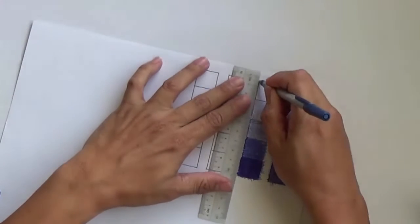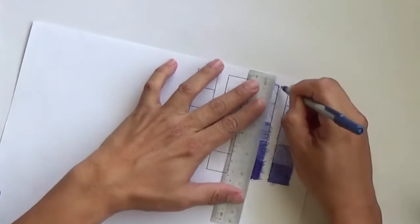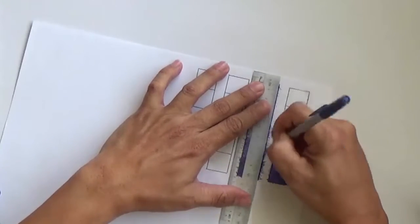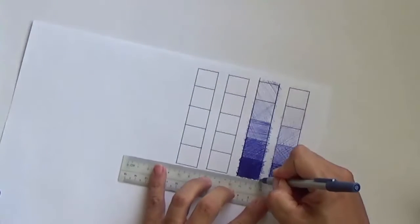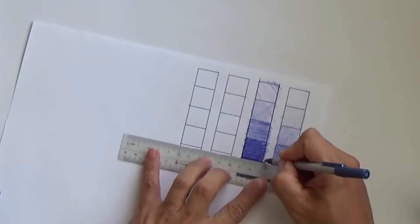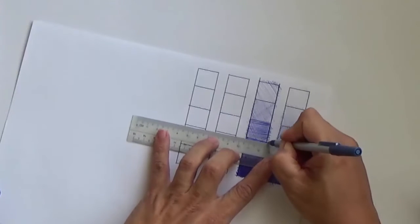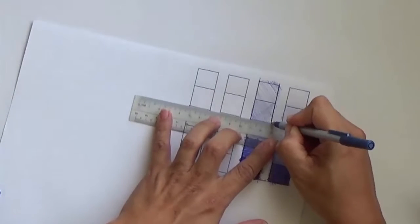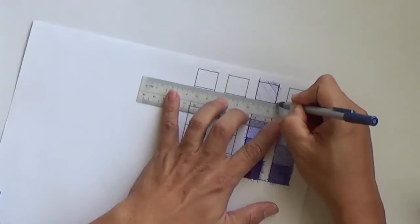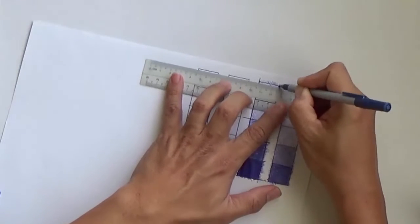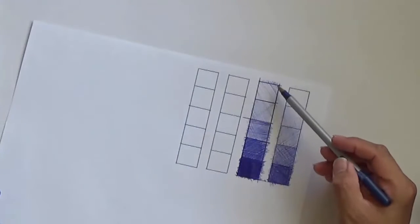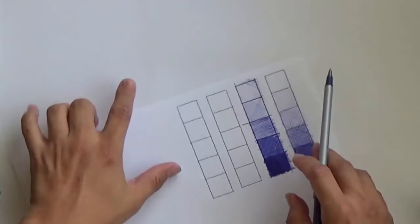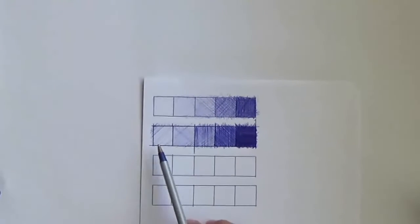So after I'm done, I'm going to redraw the lines. Clean up the edges and define the boundaries of each of the squares. So there you have it. The shades using pen, in this case from light to darkest.